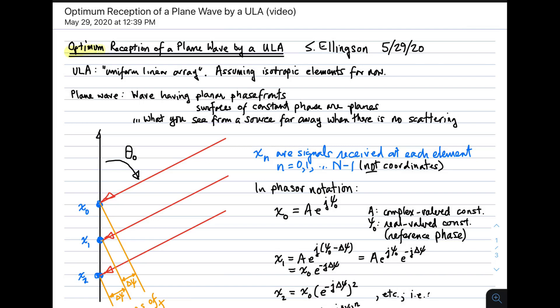Hi, this lecture is about optimum reception of a plane wave by a ULA. By ULA, I mean, as usual, Uniform Linear Array. That's an array consisting of elements which are evenly spaced along the line, as shown in the picture in the lower left of this screen right now. I'm going to be assuming isotropic elements, at least for now, for this lecture. In practice, there really is no such thing as an isotropic element—that is, there's no such thing as an element which has uniform response over all spatial directions. But that distinction is not so important for this lecture and will not affect the results.